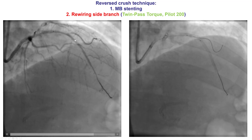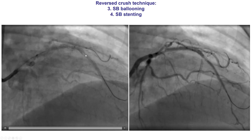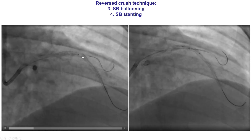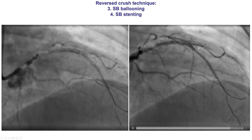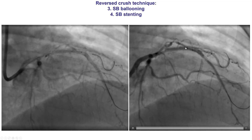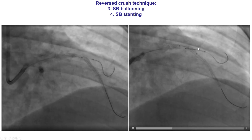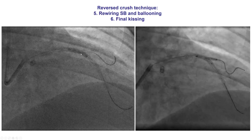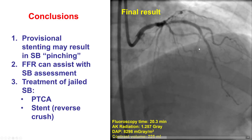We had the stent placed across the ostium of the LAD. We placed a wire into the diagonal branch and ballooned the ostium of the side branch, which still did not look great. We therefore placed an additional stent into the side branch protruding 2-3 mm into the main vessel to ensure the origin of the diagonal was covered. A balloon was also positioned in the main vessel to crush the side branch stent after deployment. We deployed the stent into the diagonal, removed it, and crushed the protruding stent portion by inflating the balloon in the LAD. We then rewired through the LAD struts and performed final kissing balloon inflation, providing a nice result with good flow in both the LAD and the diagonal branch.